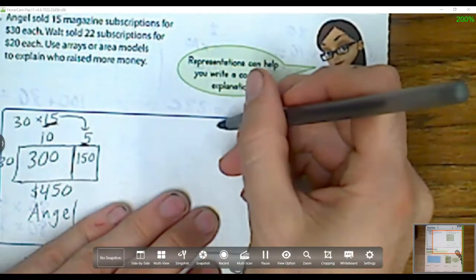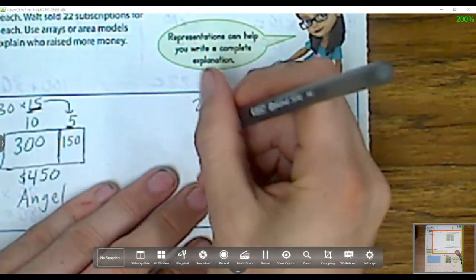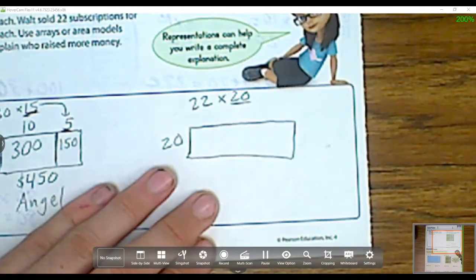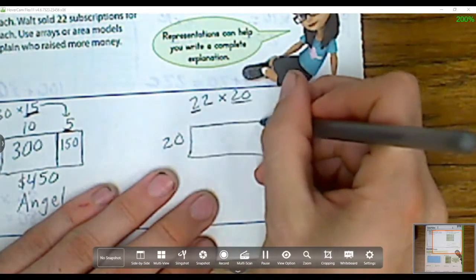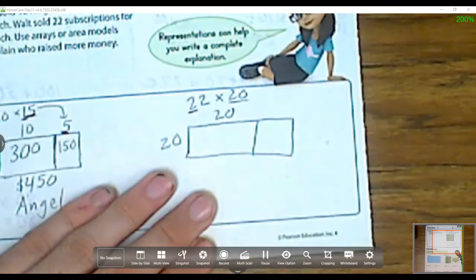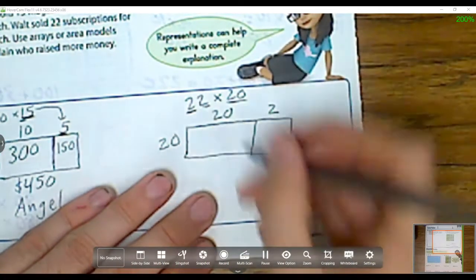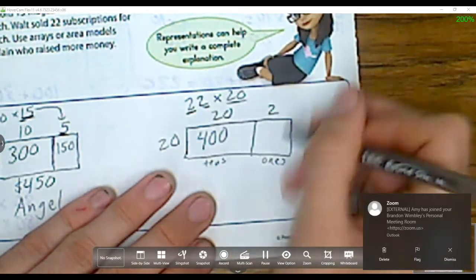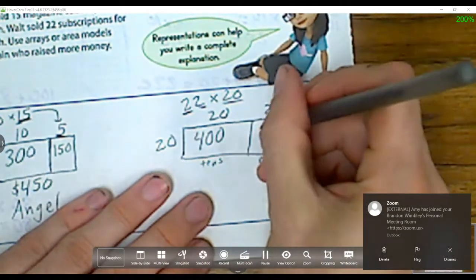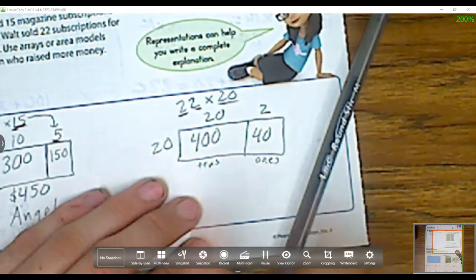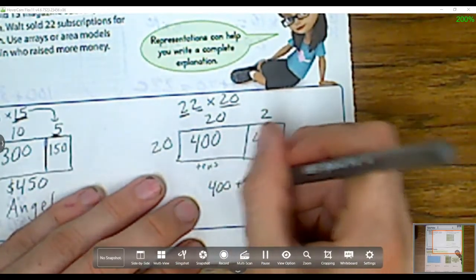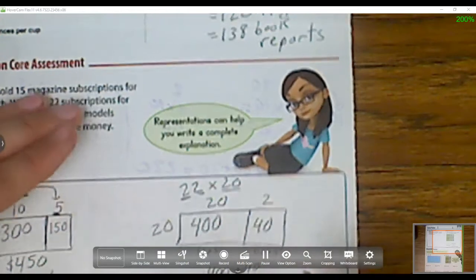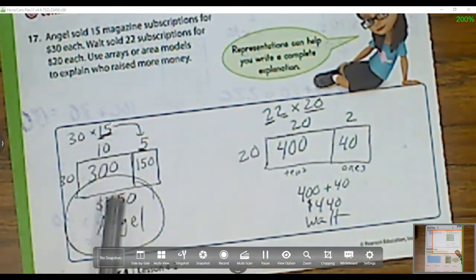What about Walt? Walt had 22 times 20. So let's draw our model. This is my 20 that goes to the side, and 22 is broken up into two tens, so there's my 20, and two ones. Remember, it's tens and ones, it's not what I have. 20 times 20 is 400, 20 times 2 is 40. So now let's see what we have. That would be 400 plus 40 is 440. So who raised more money, Walt or Angel? I see Angel did by $10. Alright, guys. Good job.